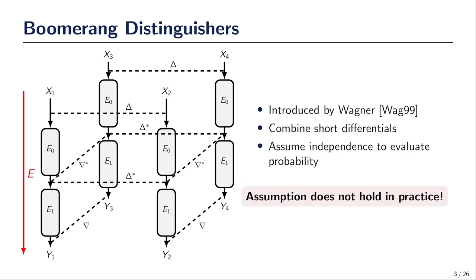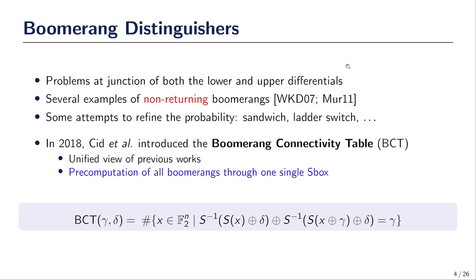Unfortunately, this assumption does not hold in practice. Indeed, we found several examples of non-returning Boomerangs and the problems occur at the junction of both the lower and the upper differentials. So some attempts were made to refine the probability of Boomerangs.